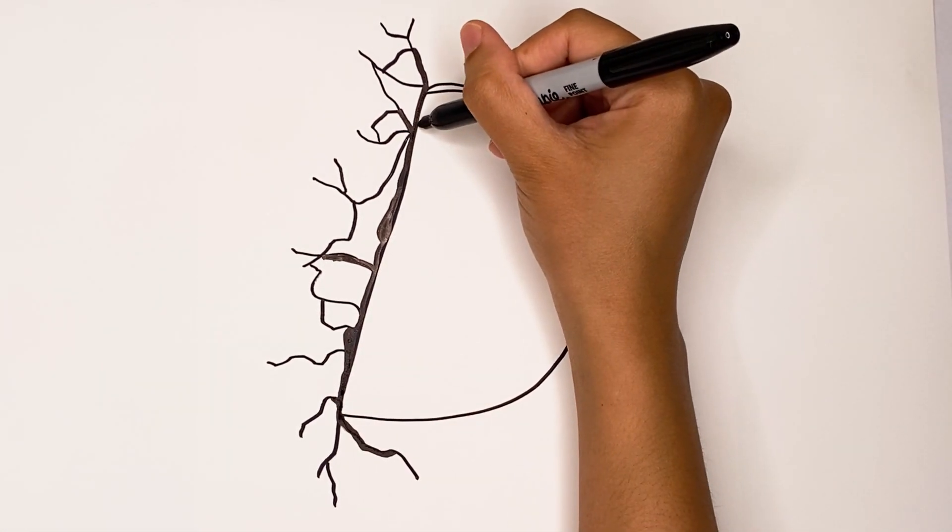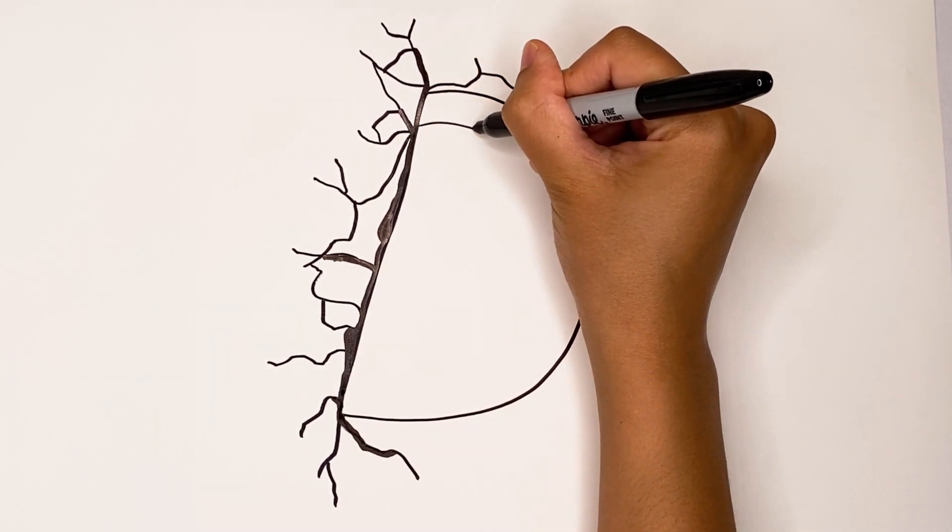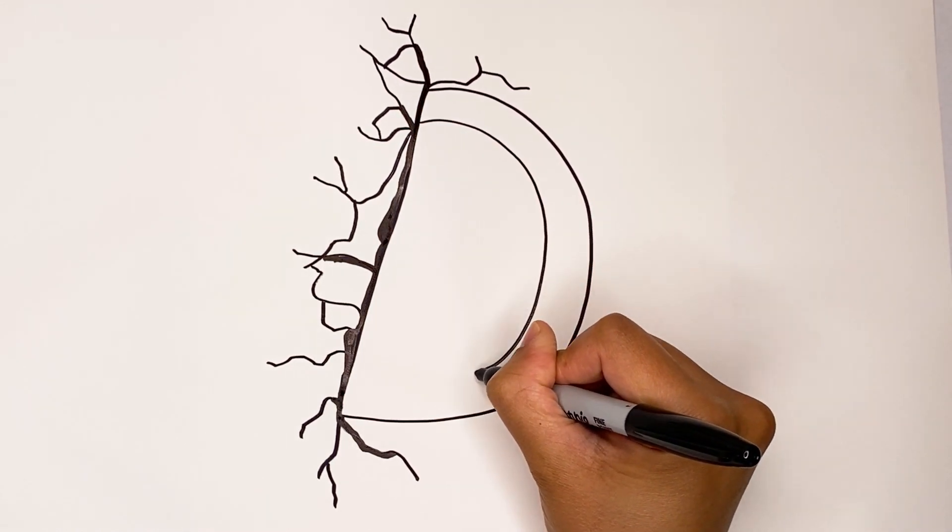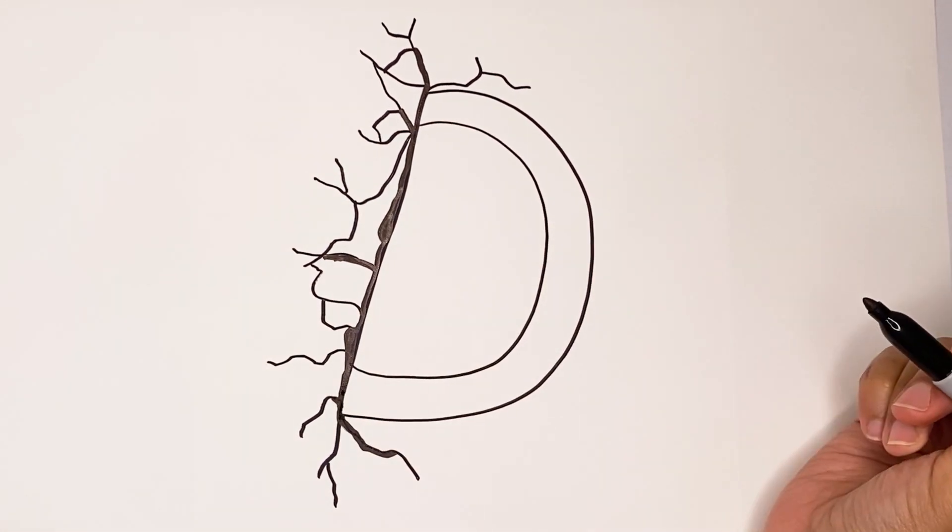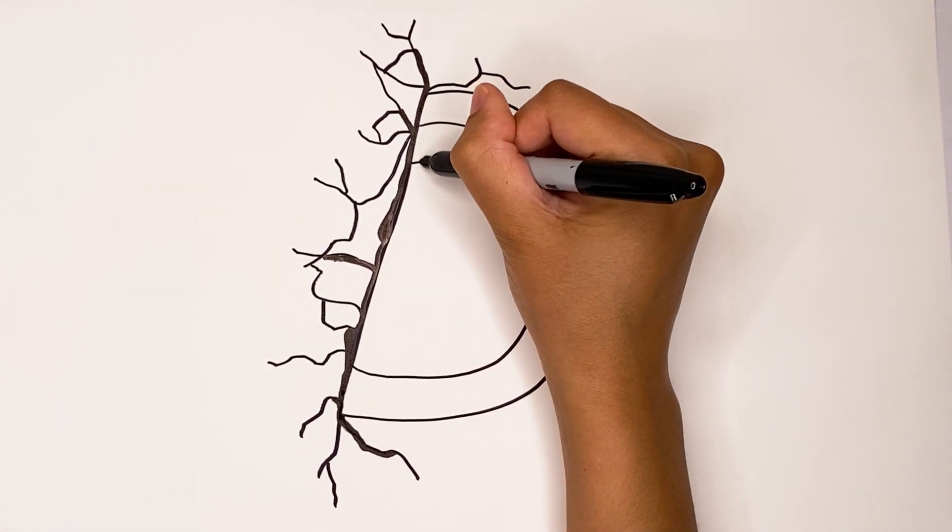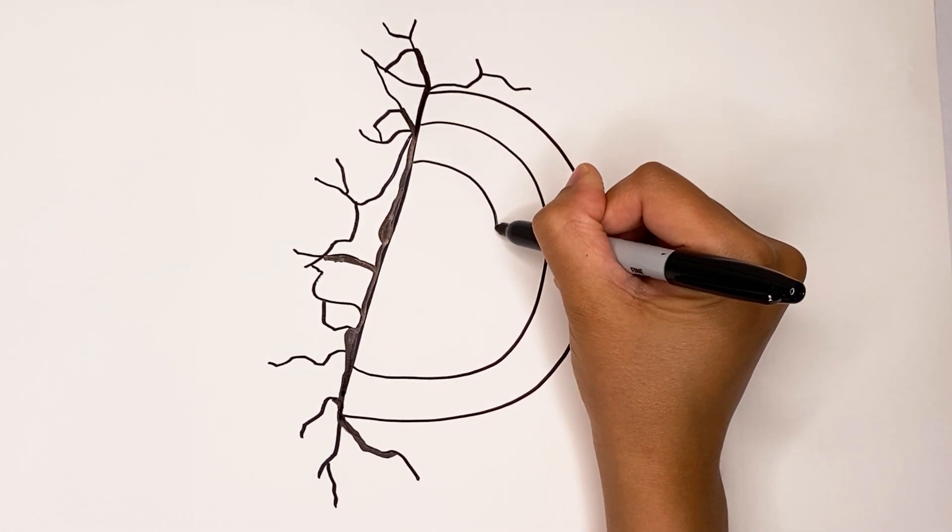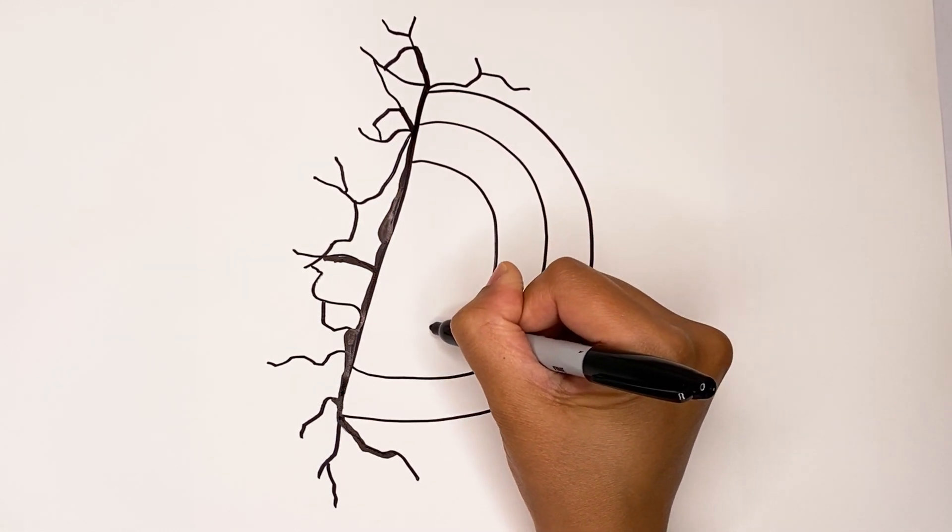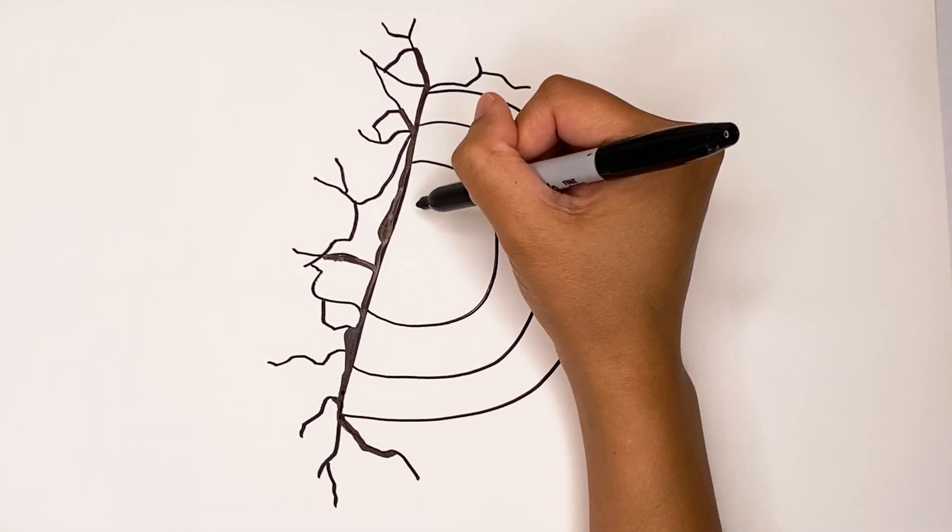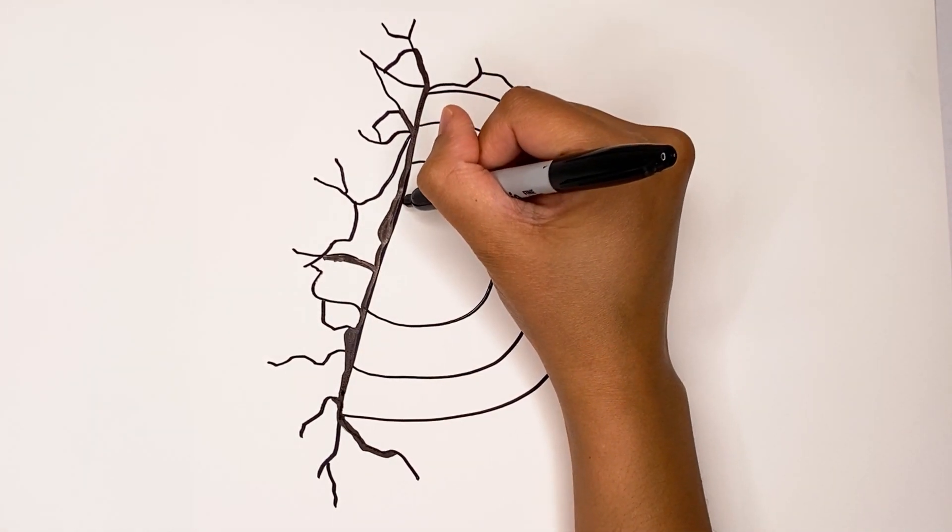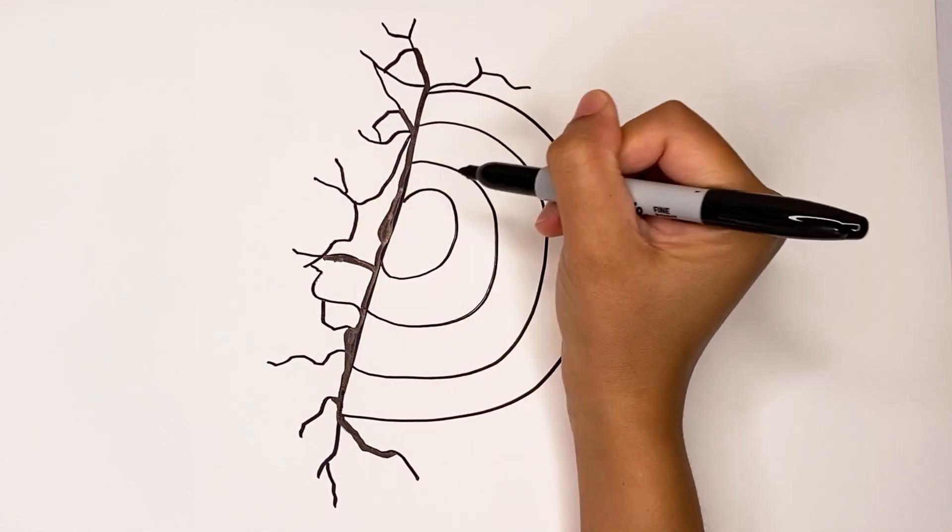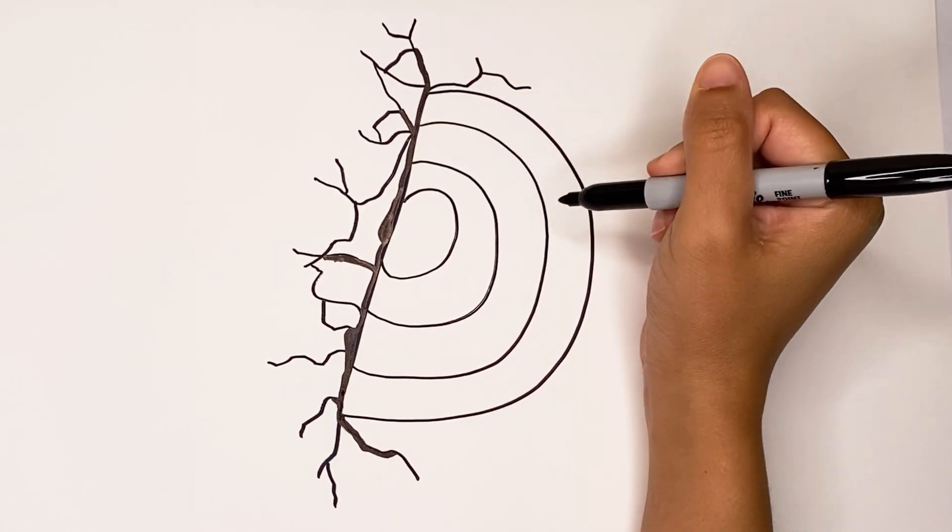Let's do another one right here. Curve it in kind of like a rainbow and stop right there. Now this one's going to be more of a circle. So let's start right here and then go in and in. There we go.